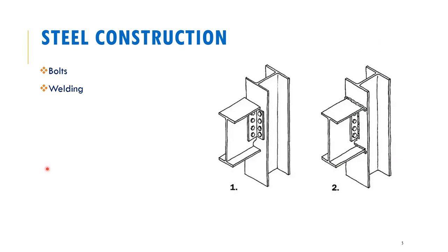When constructing your steel structure, there are two types of connections you can adopt. The first is a bolted connection, where bolts connect your beam onto the column. The second type is a welded connection, where you can see the welds highlighted. For the welded connection, bolts are also put in place — these are just used to make installation easier, to roughly hold the beam onto the column while the welding takes place.